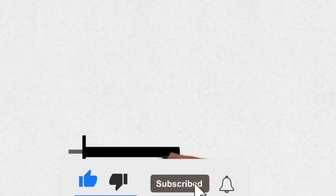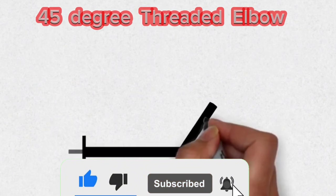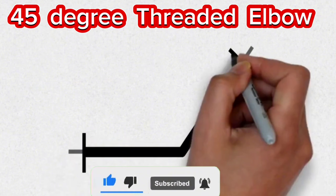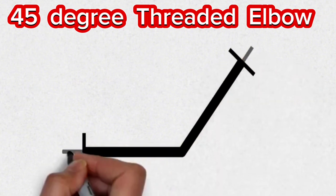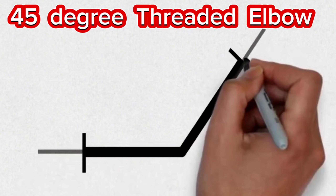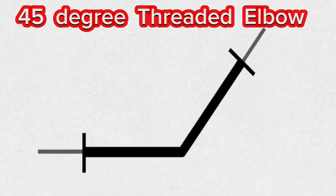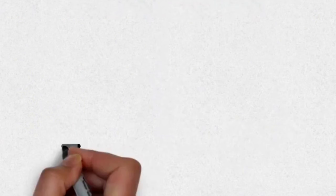This symbol, which is used in pipe isometrics, is the isometric symbol of the 45-degree threaded elbow. These 45-degree elbow symbols are used in threaded pipeline projects.